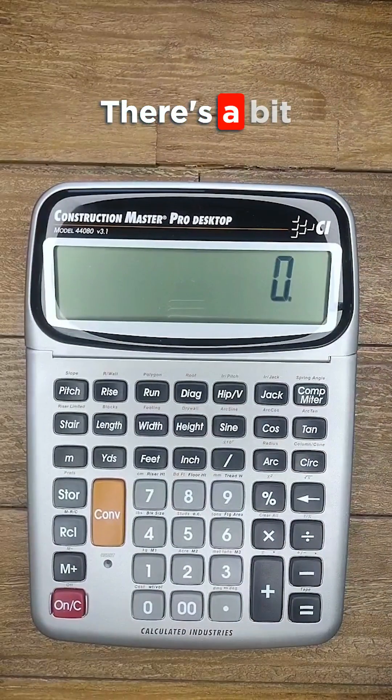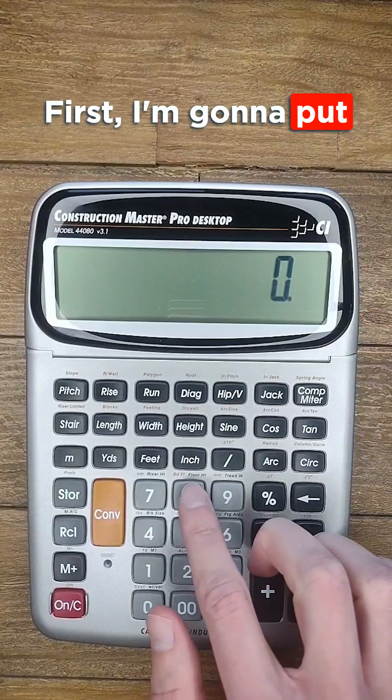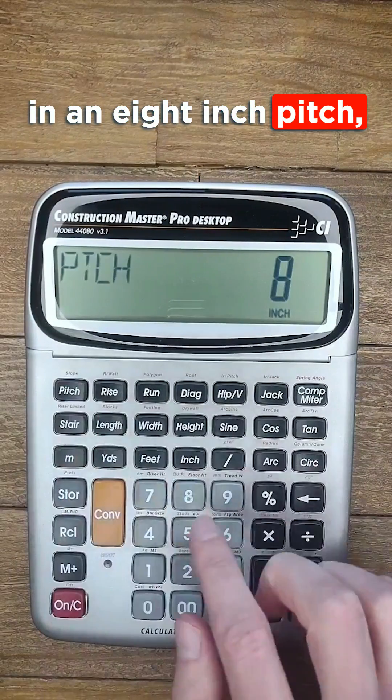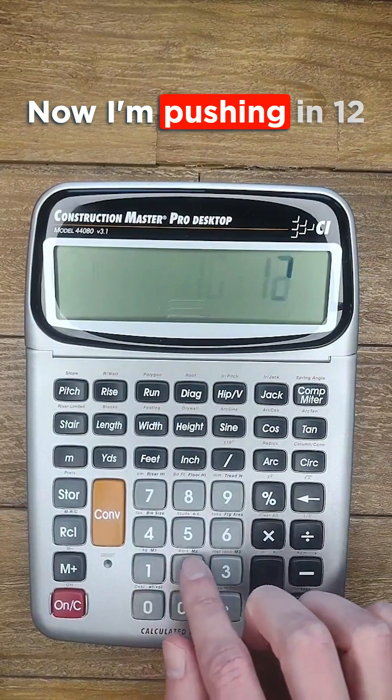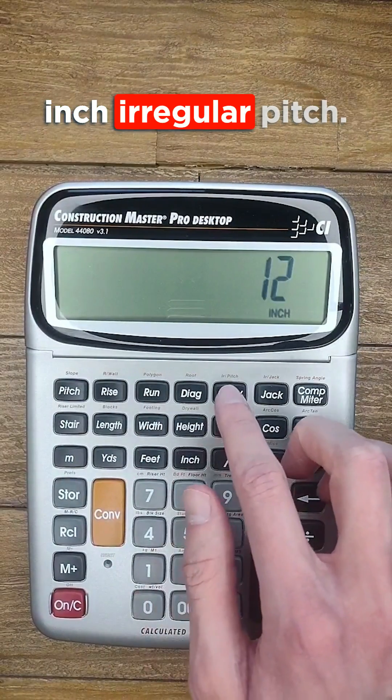For irregular hips there's a bit more to it. First I'm going to put in an 8 inch pitch, then a 10 foot run. Now I'm pushing in 12 inch irregular pitch.